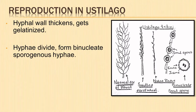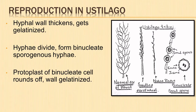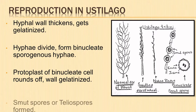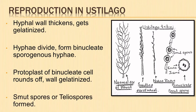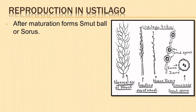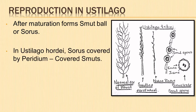Sporulation starts in the center of the hyphal mass. The hyphal wall thickens and gets gelatinized. The hyphae divide, forming short binucleate intertwined segments called sporogenous hyphae. The protoplast of each binucleate cell rounds off, the wall becomes gelatinized, and the protoplast secretes a thick wall around itself, resulting in a smut spore or teliospore.